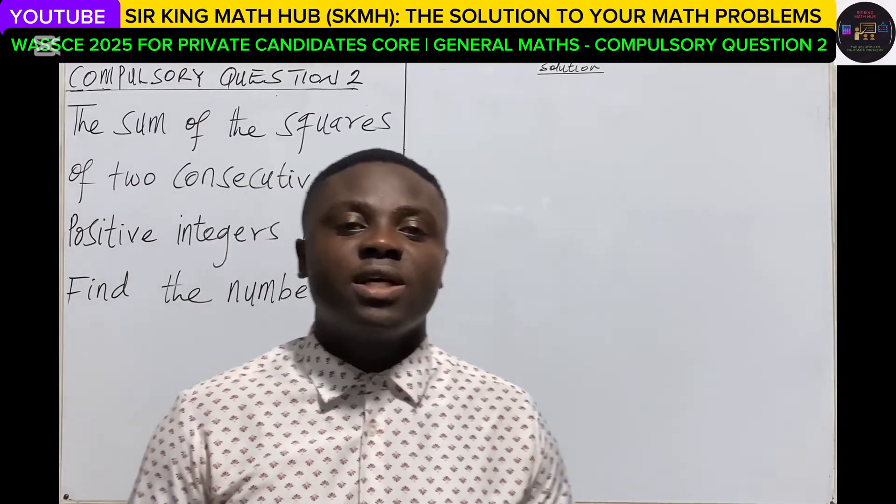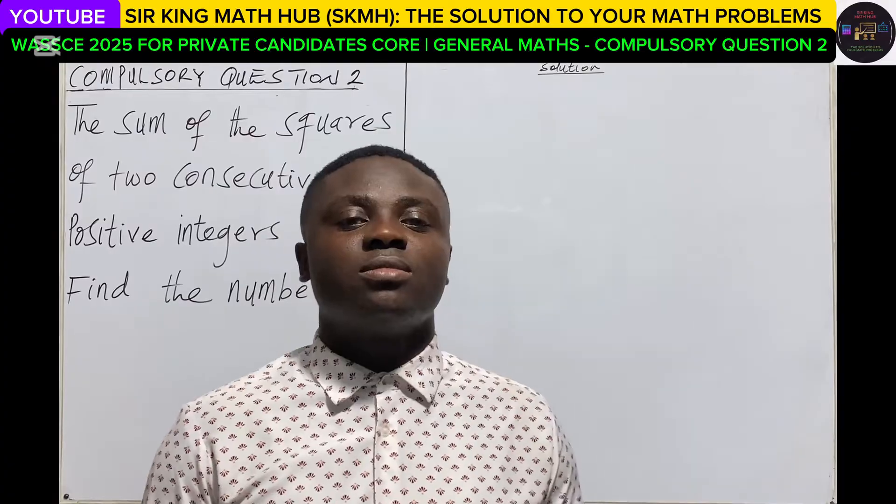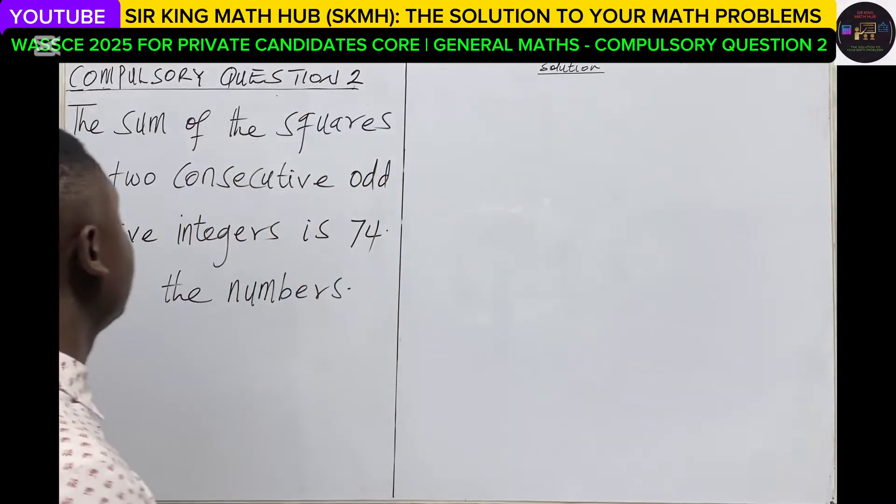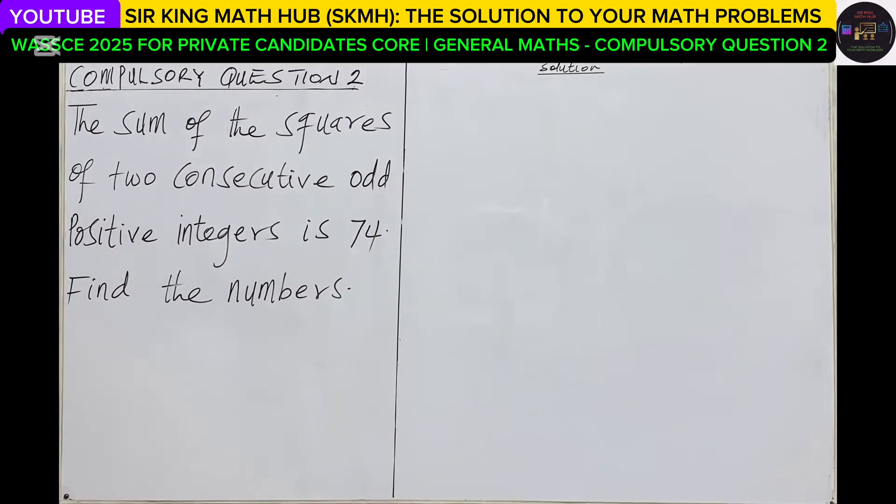Good evening viewers, welcome again to my channel, Sir King Math Hub, the solution to your math problems. This is WASSCE 2025 for private candidates, core general maths, compulsory question 2. The sum of the squares of two consecutive odd positive integers is 74.